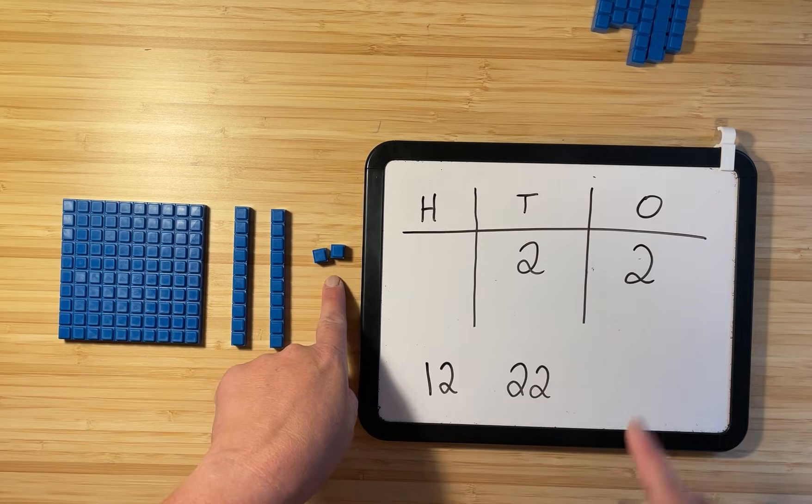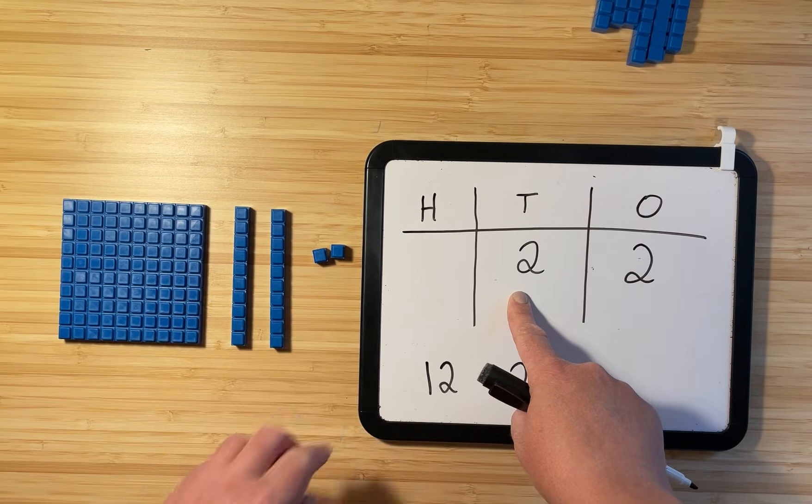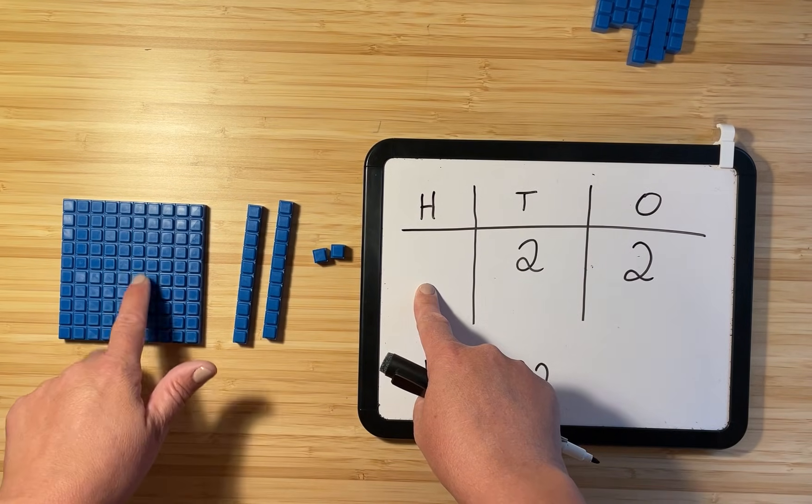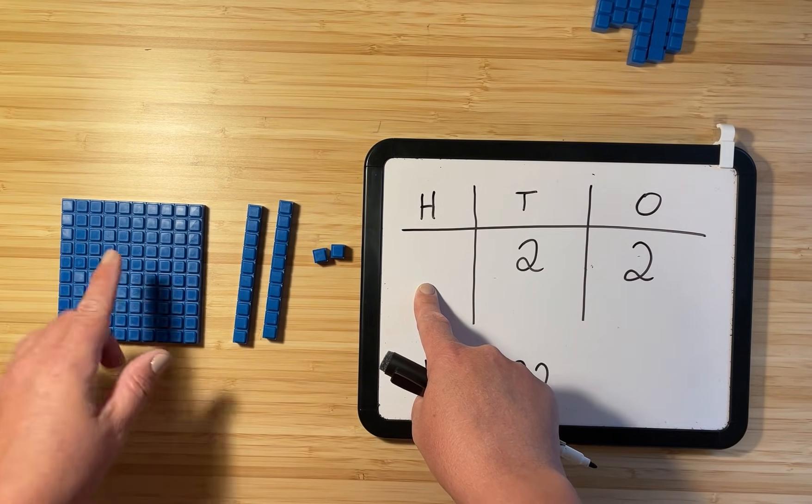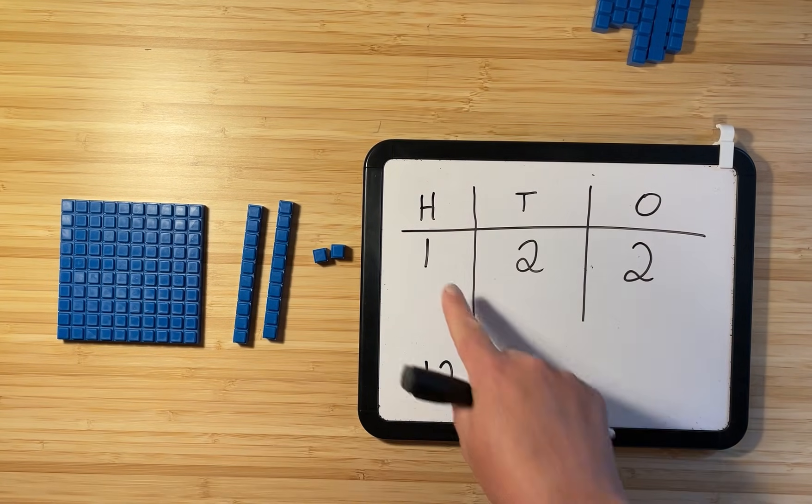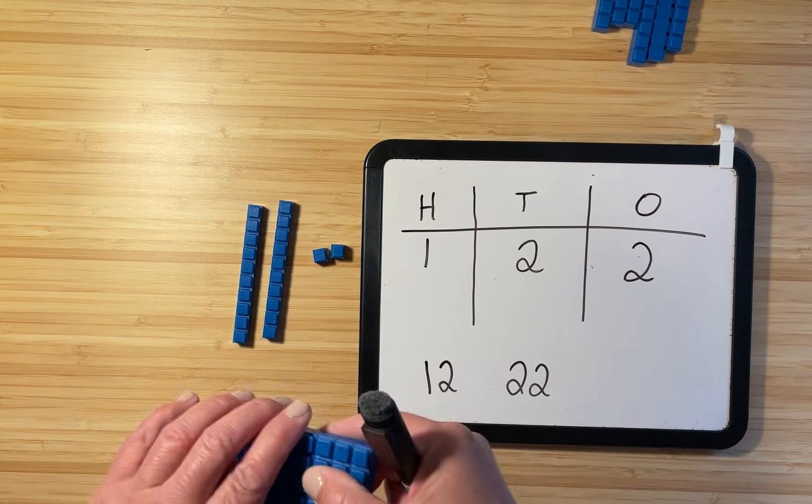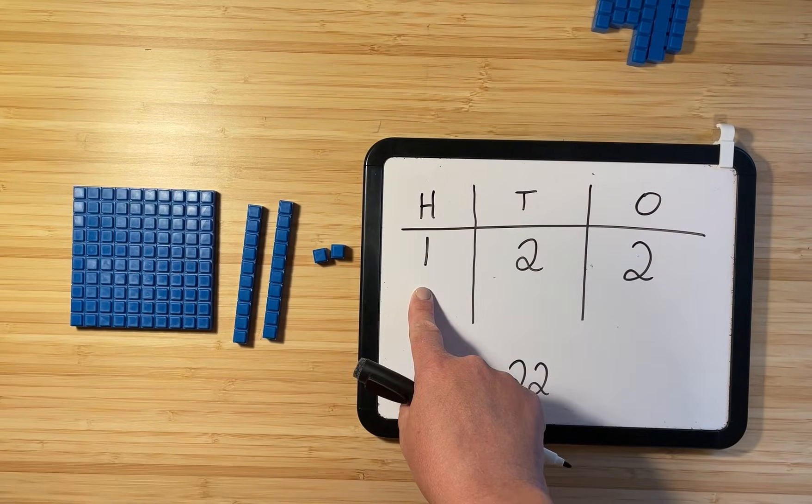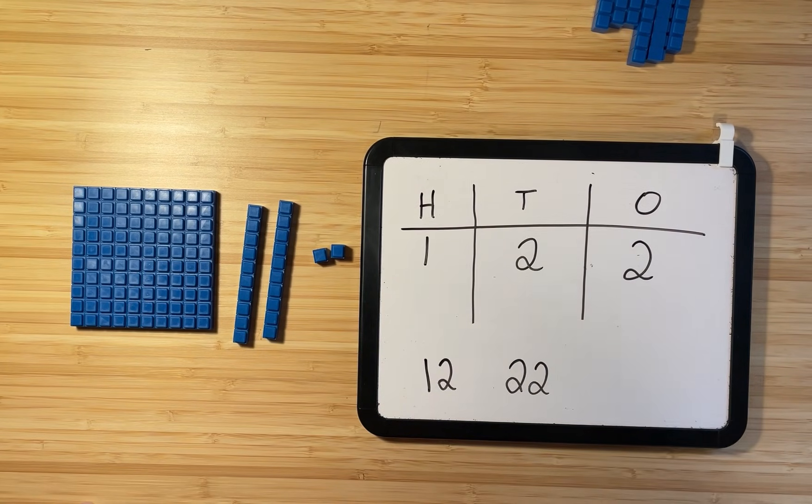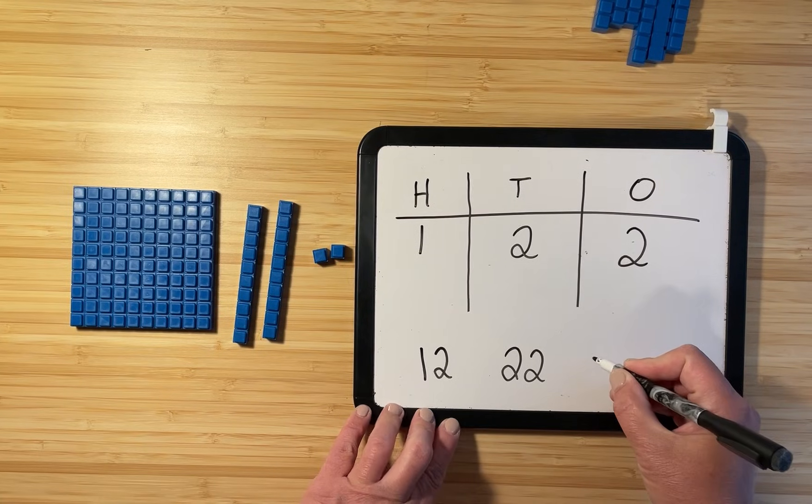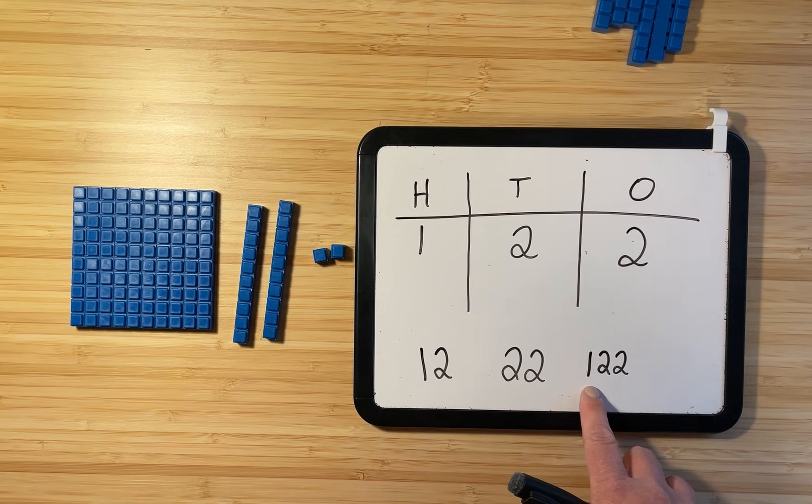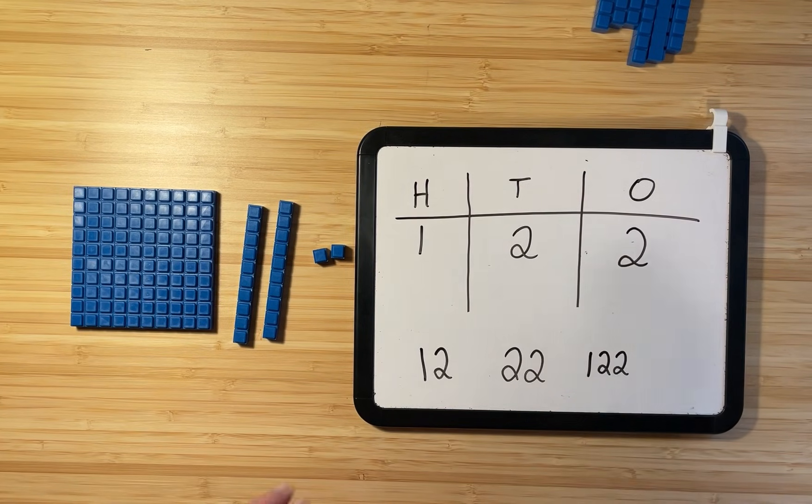Let's take a look first of all at our place value chart. Do we still have two ones? Yes, we do. Do we still have two tens? Yes, we do. But now we added, what did we add? We added 100. So we're going to put a one in this column because we added one 100 block. Now our number reads 122. And if we wanted to write that out in digits, we would write 122.